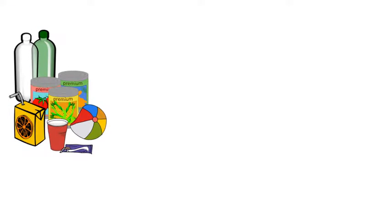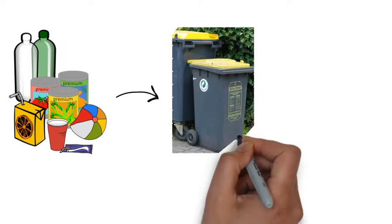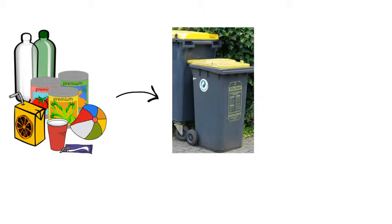Packaging and objects made from plastic, metal and composite materials, for example, plastic bottles, toys, pots, tinfoil or drinks cartons. These we put in the yellow or orange bin for valuable materials.